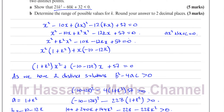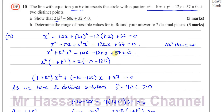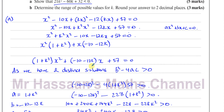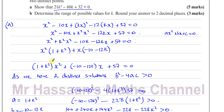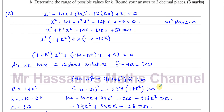To summarise Part A: we substituted the line equation into the circle equation to find their intersection. Since there are two distinct points of intersection, the discriminant b² - 4ac must be greater than 0. We put in the values of a, b, c, simplified, and rearranged to produce the required inequality.